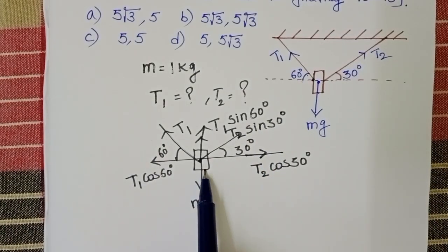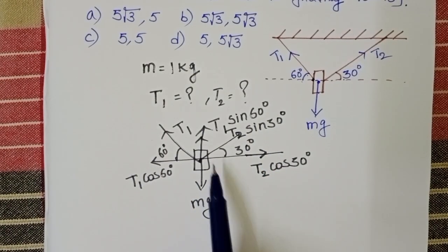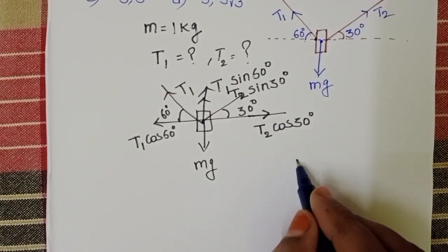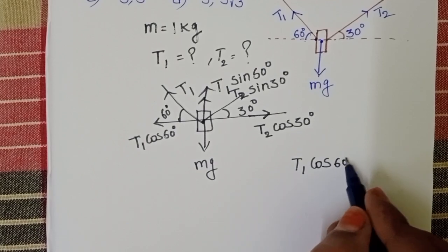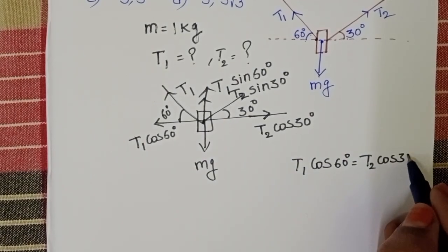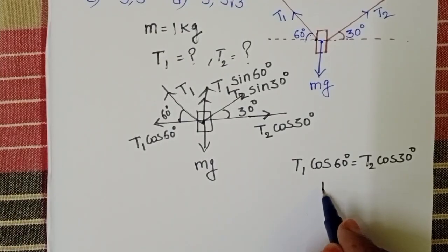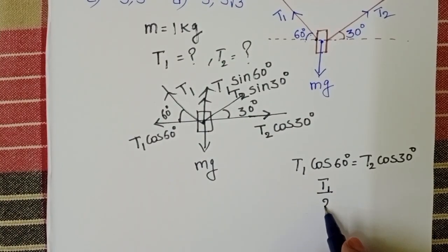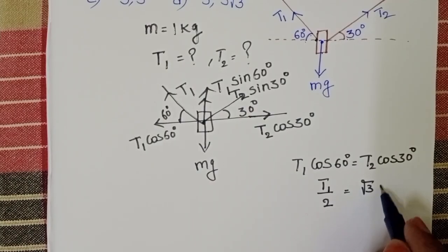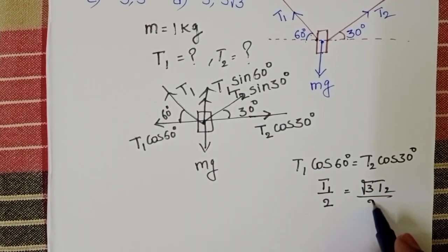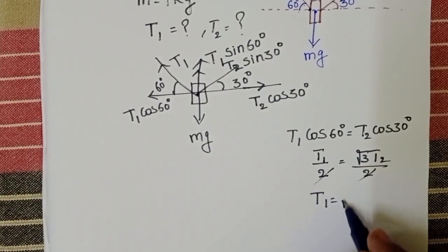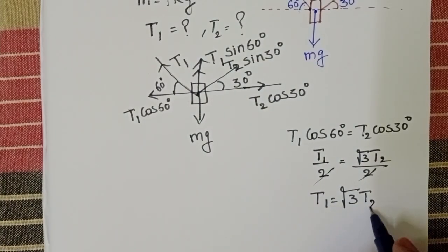This body is horizontally equilibrium and vertically equilibrium. So T1 cos 60 degrees equals T2 cos 30 degrees. Cos 60 value 1 by 2, T1 by 2 equals cos 30 root 3 by 2. Here 2 gets cancelled, T1 equals root 3 T2.